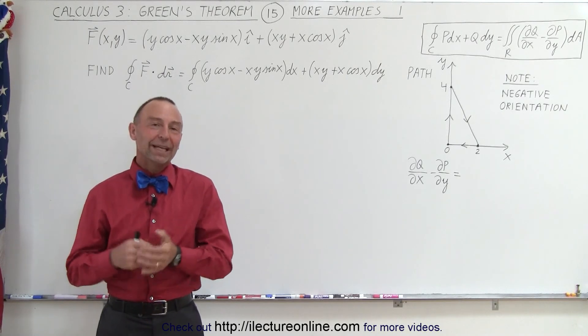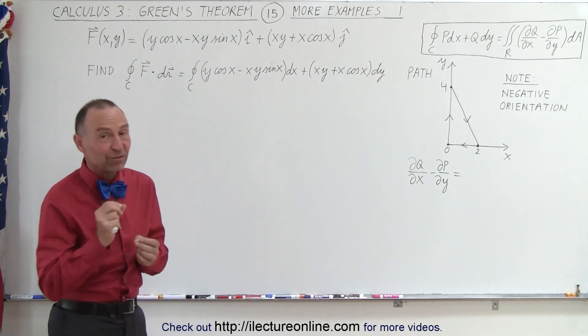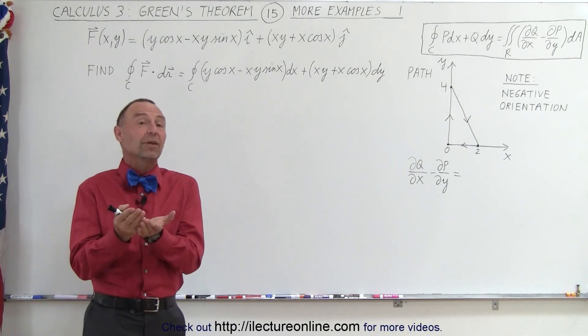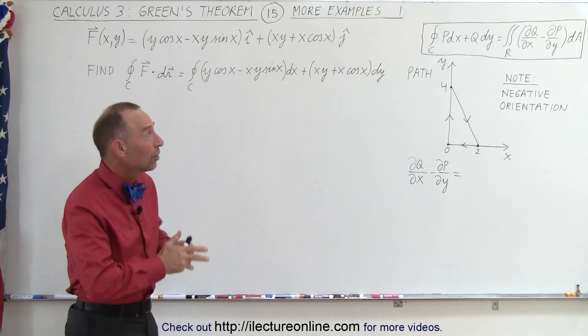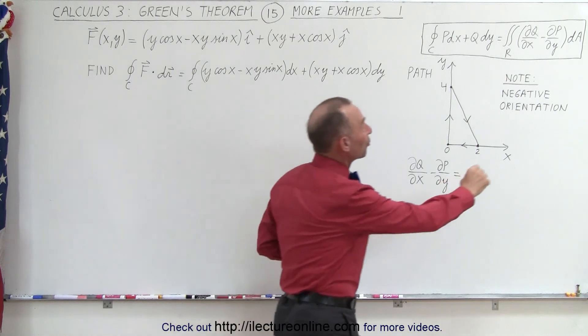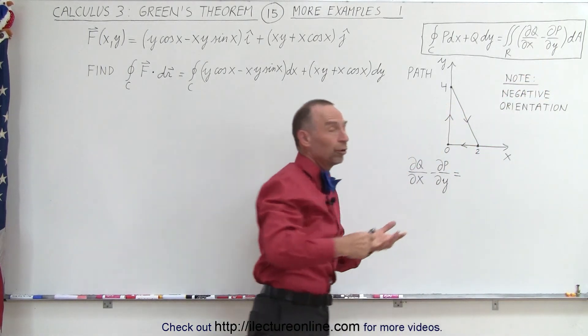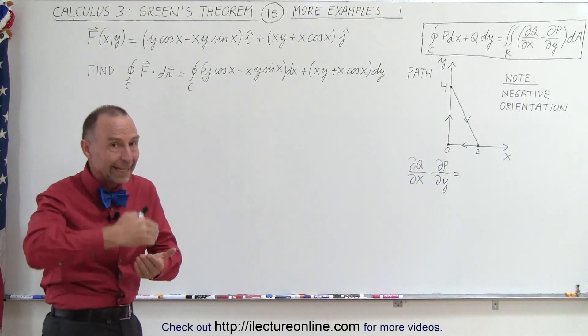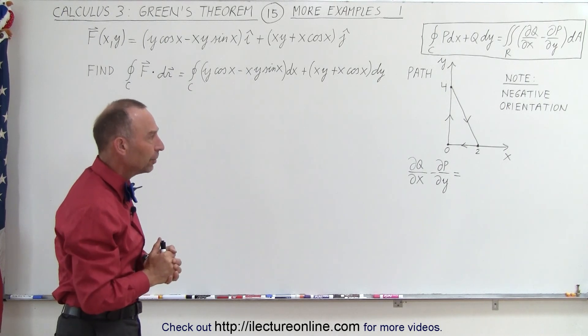Welcome to Electron Line. Our next example in using Green's Theorem points out something very specific that we need to pay attention to. Again, of course, Green's Theorem means that instead of doing the line integral, we're going to calculate the Green's Theorem portion of the equation, the right side of the equation, where we have to find the partial of Q with respect to X and the partial of P with respect to Y, and then simply integrate over the region bounded by the path taken on the line integral.